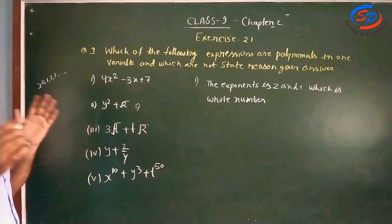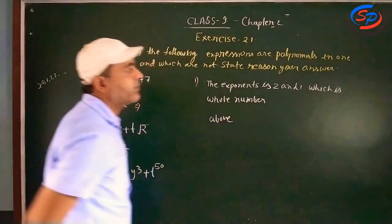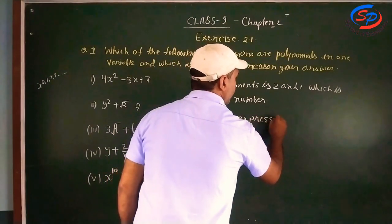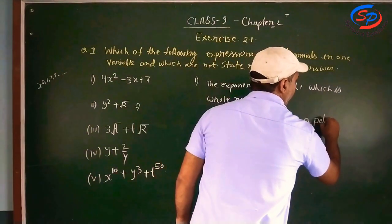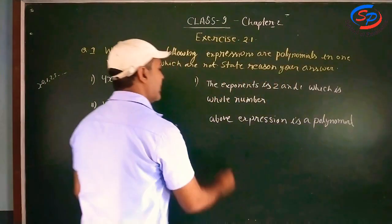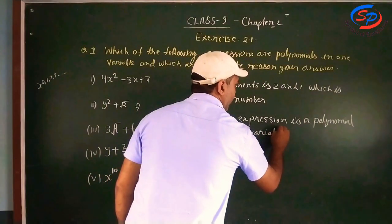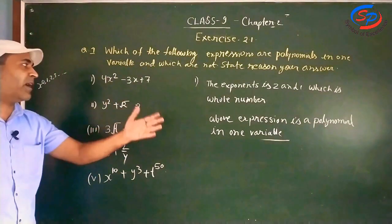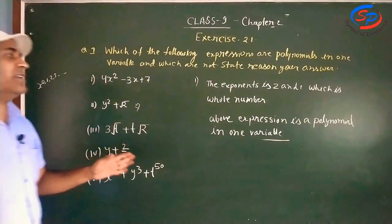So the above expression is a polynomial in one variable. The exponents of x are whole numbers, so the above expression is a polynomial in one variable.